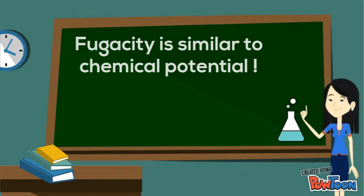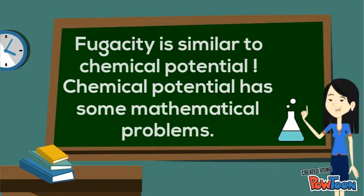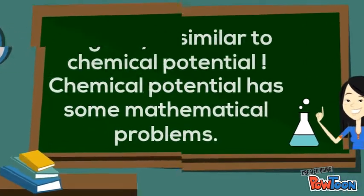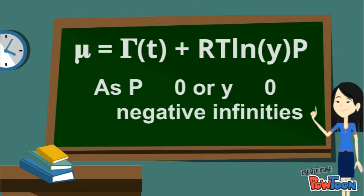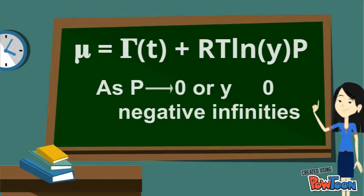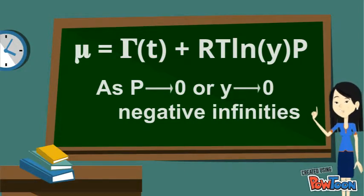The reason fugacity is the better construct is because chemical potential has some mathematical problems. Here's the equation for chemical equilibrium. As the pressure goes to an ideal gas state, or as the gas-based mole fraction of a particular species reaches infinite dilution, we have to deal with negative infinities.